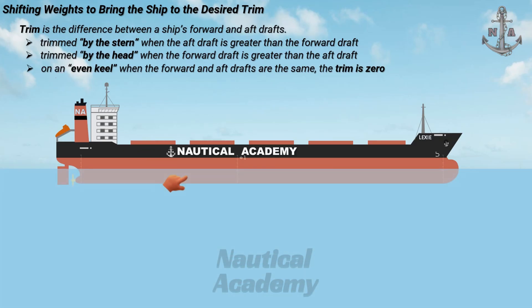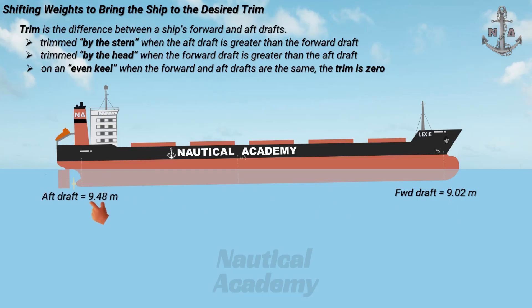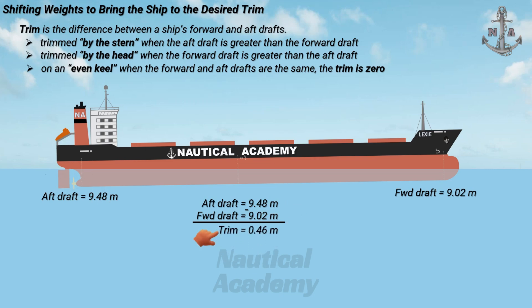In our scenario, the ship has already completed loading. The forward draft is 9.02 meters and the aft draft is 9.48 meters. The difference between these two drafts is trim, which is 0.46 meter by the stern, since the aft draft is greater than the forward draft.